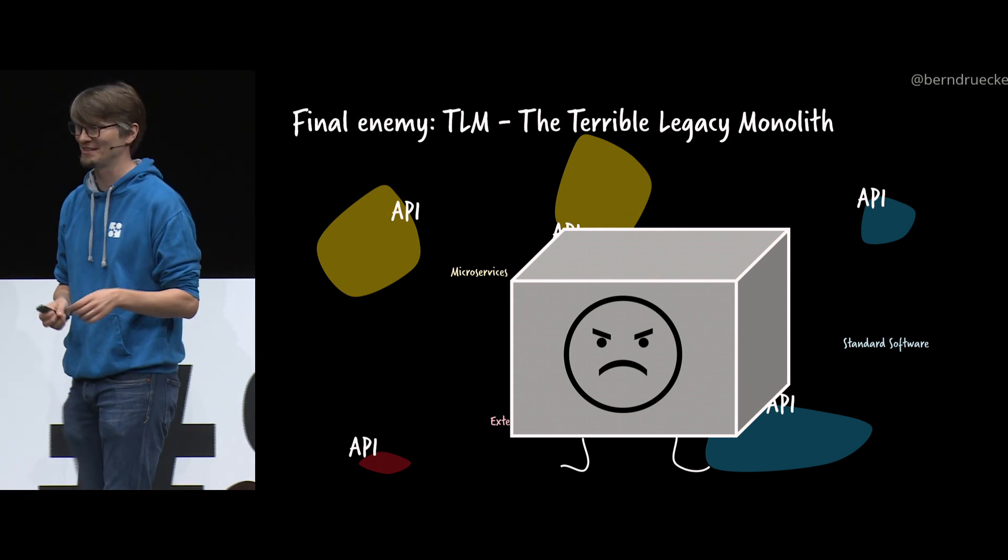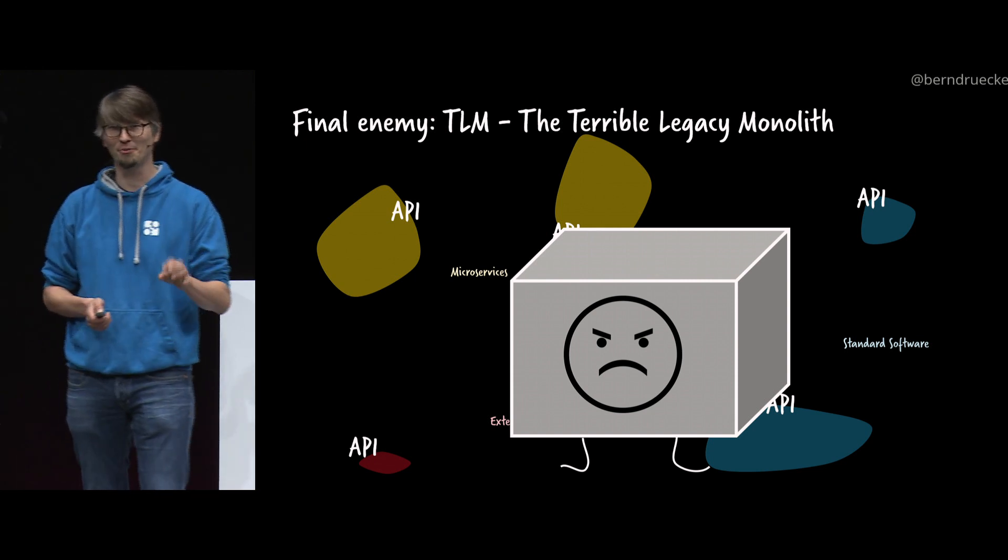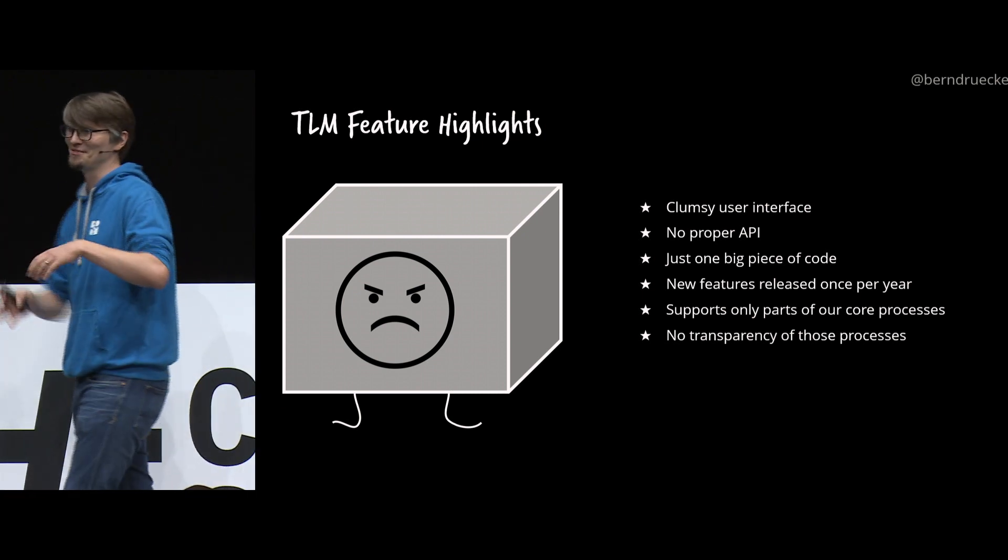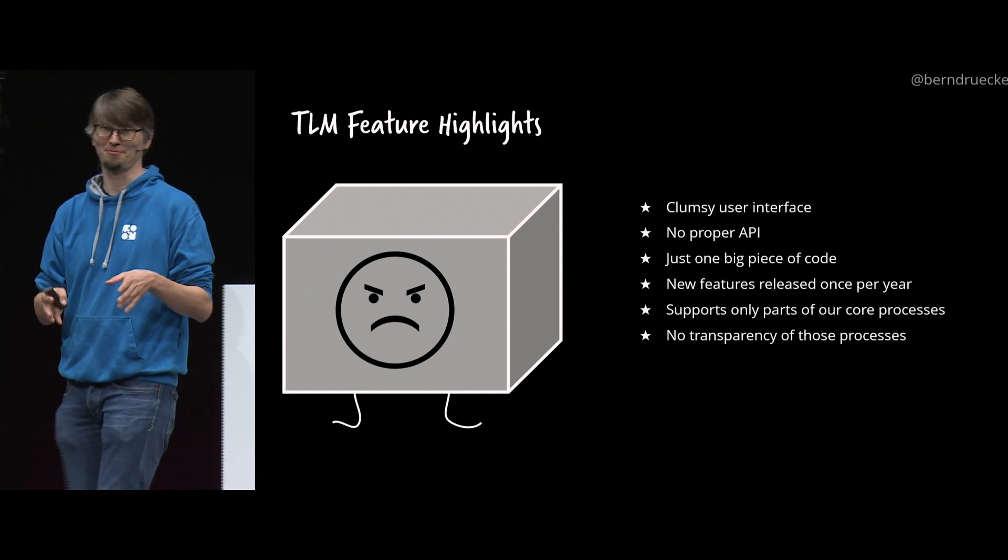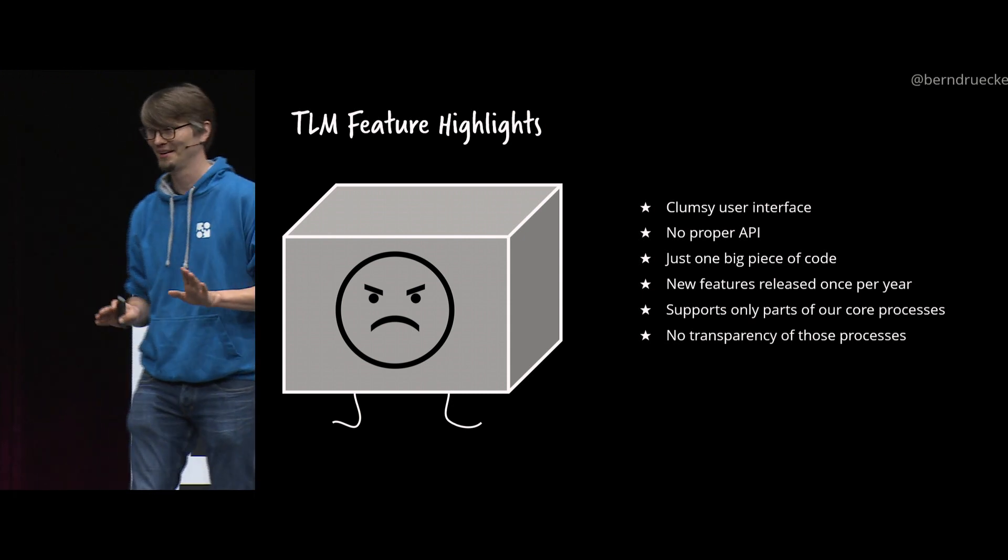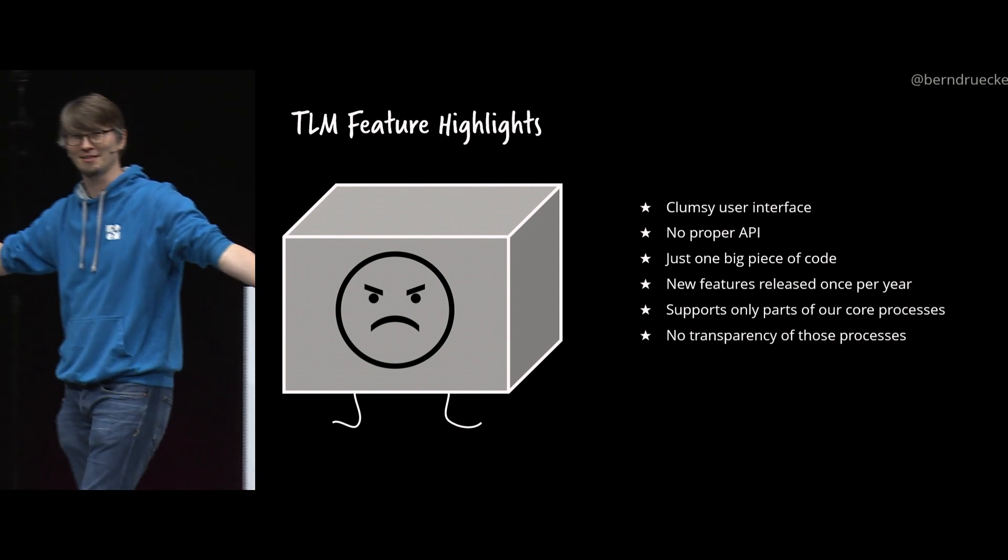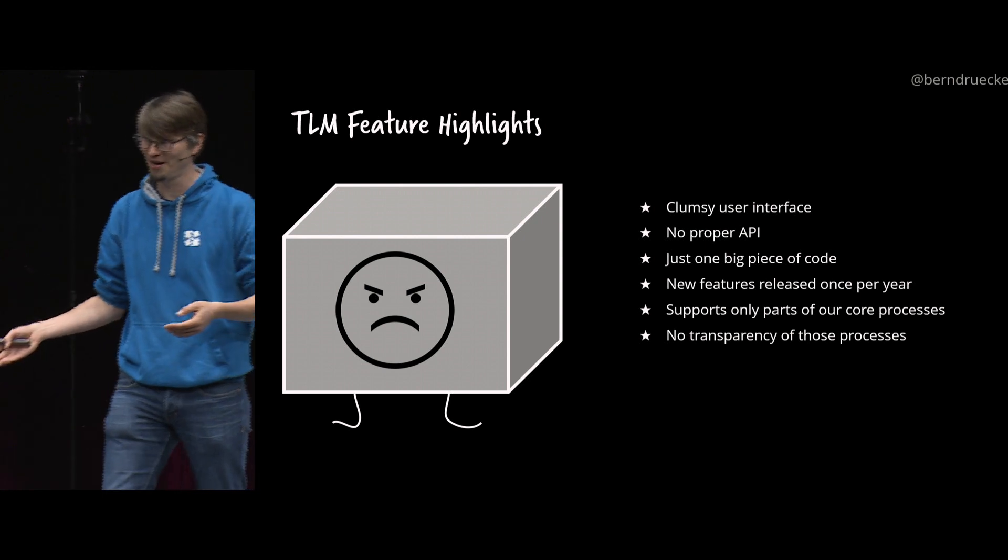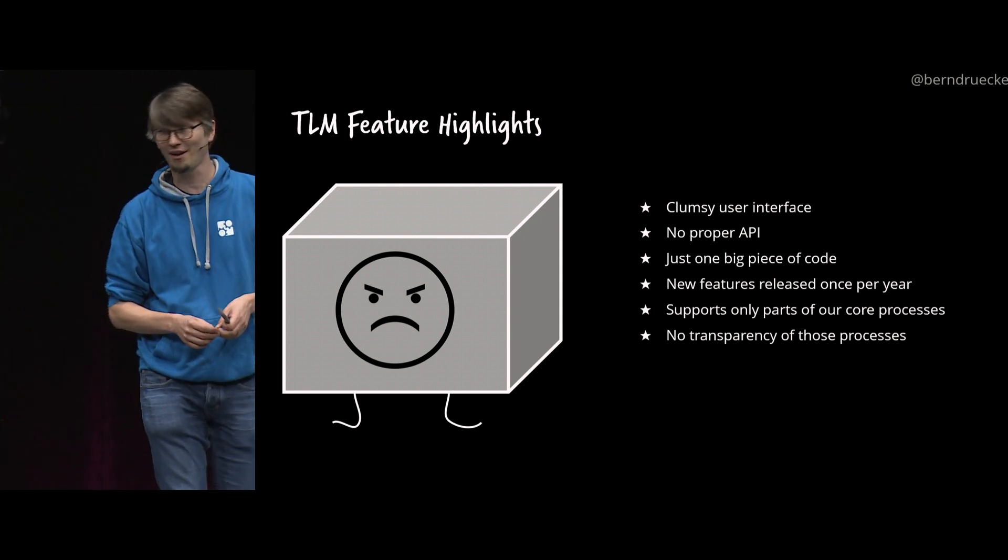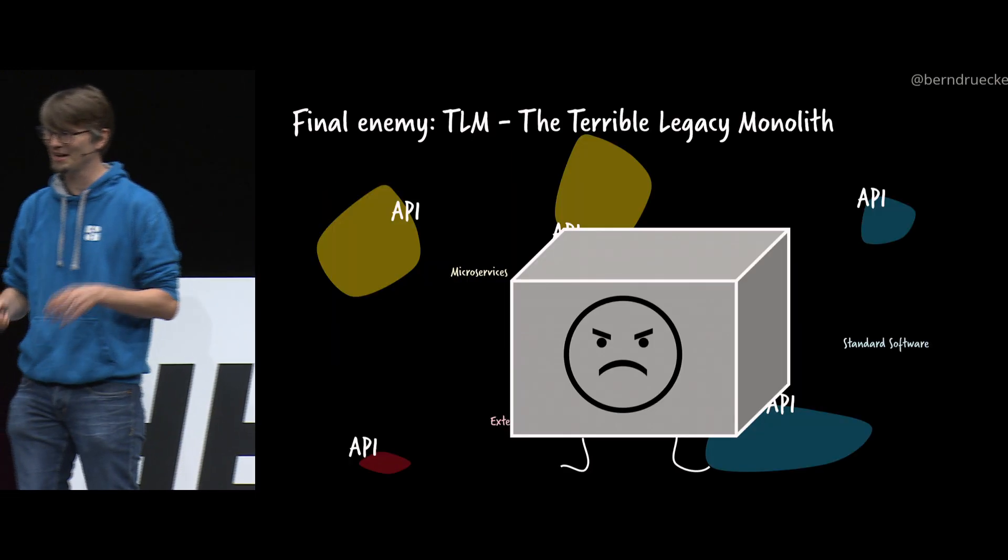The TLM is the terrible legacy monolith. He defined it very clearly, very precisely last year. So, what's the features? The features are, it has a very clumsy user interface, because it was probably built 20 years ago, probably 30, it has no proper API, right? It's one big pile of code. Nobody understands. The last people understanding it, it quitted 10 years ago or five years ago. You can release probably a tiny feature once a year, if you're lucky, and so on and so forth, right? So, that's very often the situation you have. And that one, it just sits in front of that nice idea. You want to have that in the back? How can we get there?